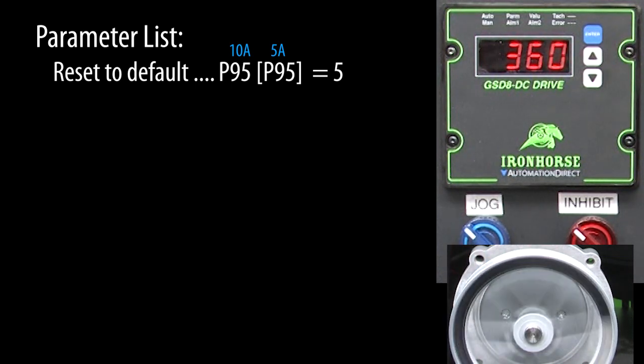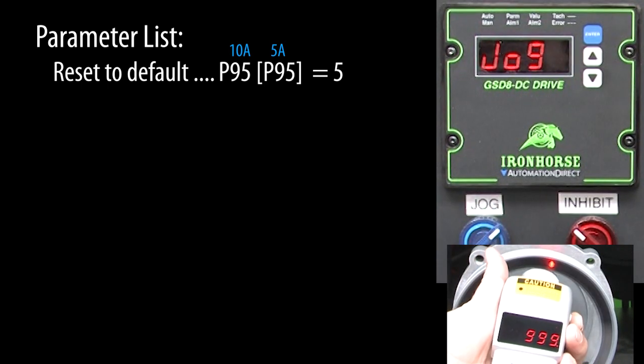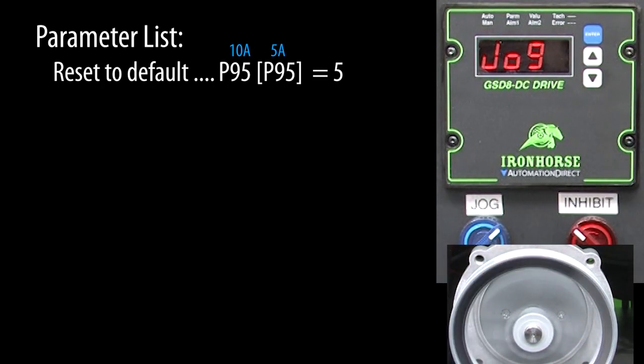The jog speed defaults to 1000. So if we enable jog, sure enough the motor goes immediately to 1000 RPM. Note that it does that immediately, it doesn't wait for the acceleration or deceleration times. I'll release the jog and it resumes the speed we had before.